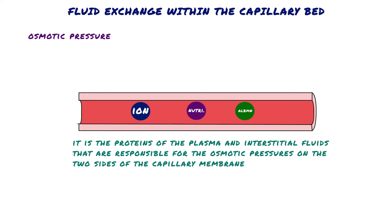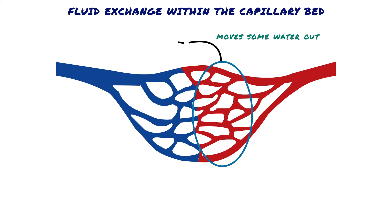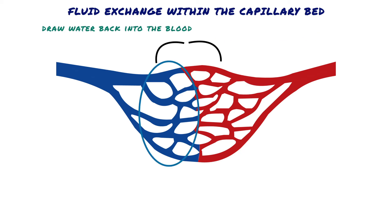Albumin is a normal circulating protein within the blood. At the capillary, albumin is a powerful attractor of water. As blood flows through the capillary bed, hydrostatic pressure moves some water out at the arterial end of the capillary network, and albumin and other osmotically active particles draw water back into the blood at the venous end. Throughout the capillary bed, these two forces are in dynamic opposition and together they maintain fluid balance.